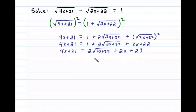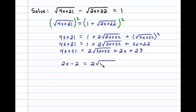And then subtracting 23 from both sides, and that'll leave us with 2x minus 2 equals two times the square root of 2x plus 22.